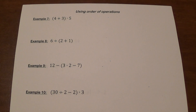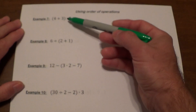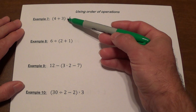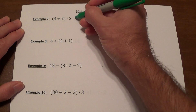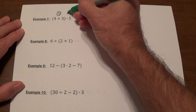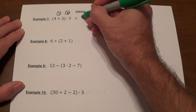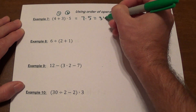Now we introduce parentheses. Remember, if you see parentheses or any grouping symbols, you always do that first. So even though we have multiplication, we must add inside the parentheses first: 4 plus 3 is 7, then 7 times 5 gives us 35.